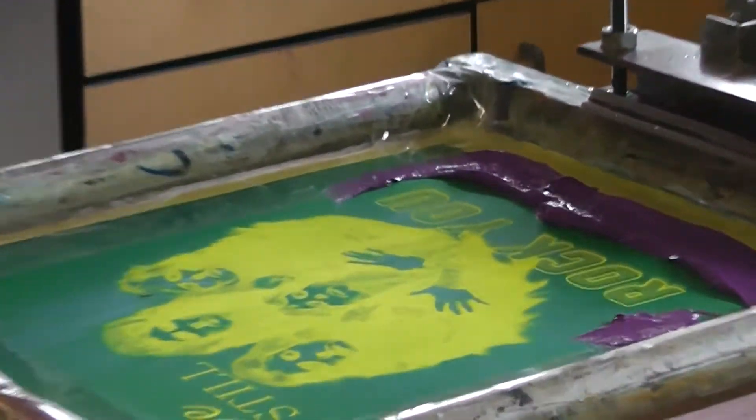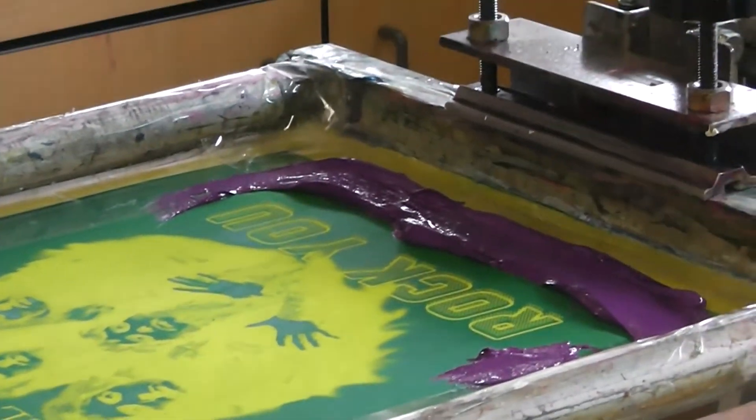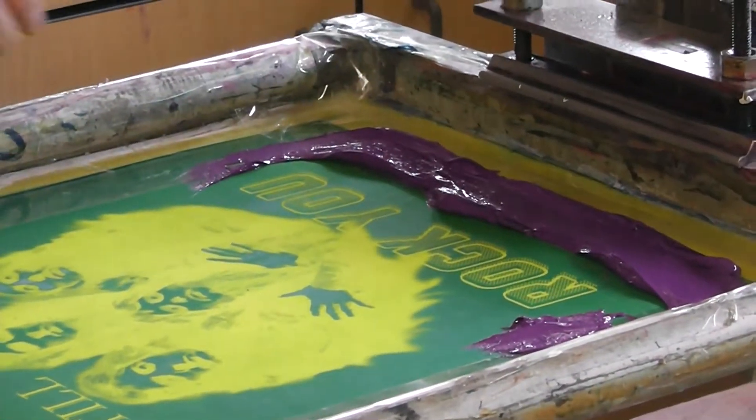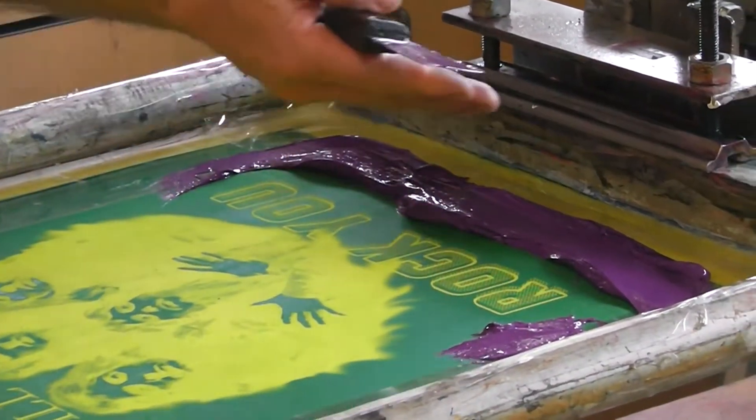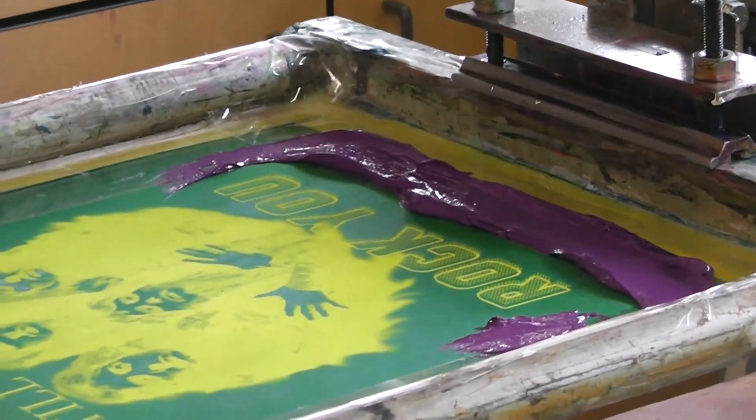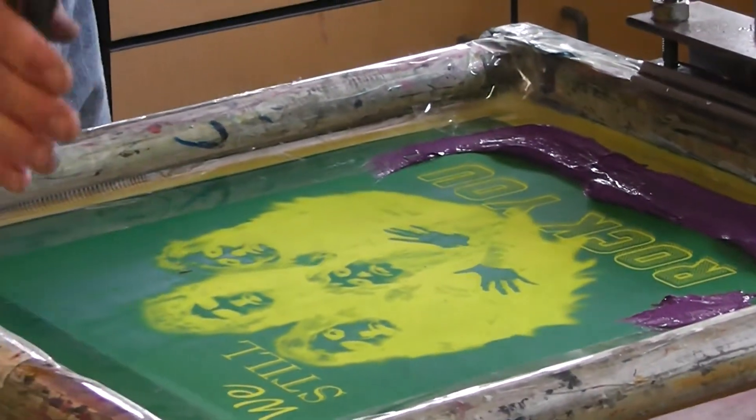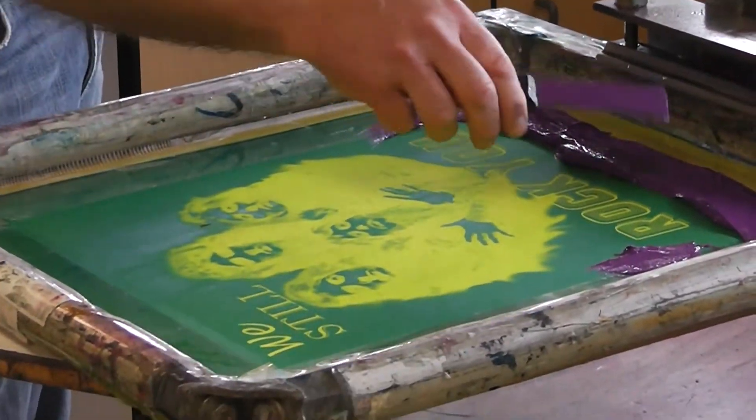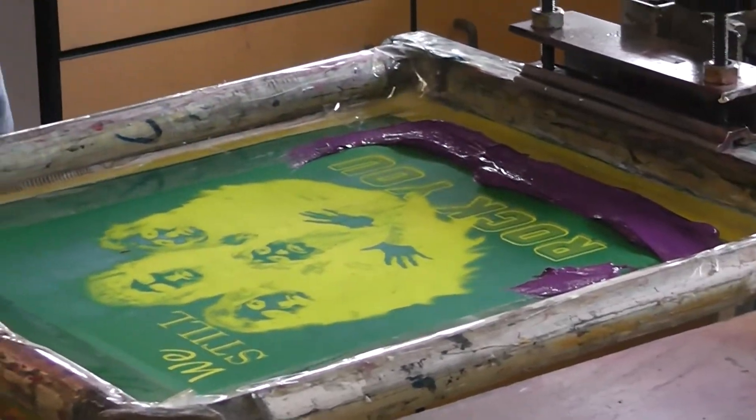Don't poke your screen with the ink knife. It is metal. It will poke a hole in your screen. So nice, even spread. You can go bottom of your image or the top. Wherever you have room. I have plenty of room at the bottom in this case. So I'm just going to put it at the bottom.